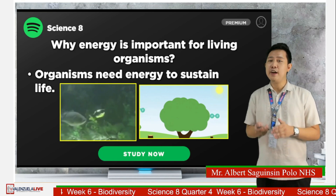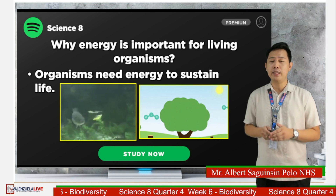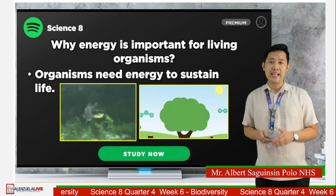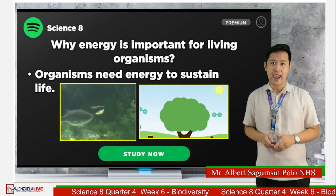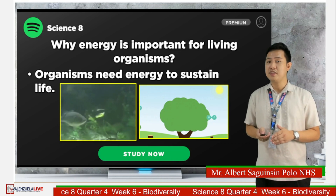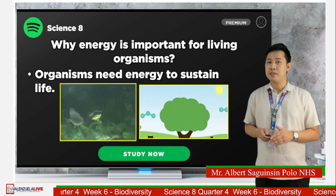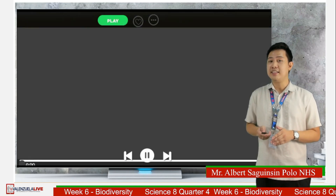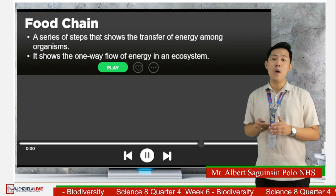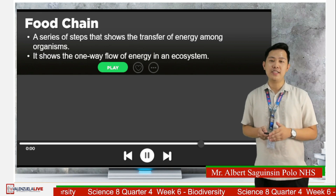The transfer of energy is one of the most important factors that controls what kind of species live in an ecosystem. The series of steps that shows the transfer of energy among organisms by eating or being eaten is called a food chain. It shows the one-way flow of energy in an ecosystem.